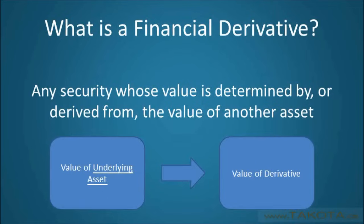An underlying asset can take many forms, but it commonly refers to stocks, bonds, commodities, currencies, interest rates, and market indexes. The most important thing to take away from our discussion of derivatives so far is that their value depends upon the value of something else — the underlying asset.